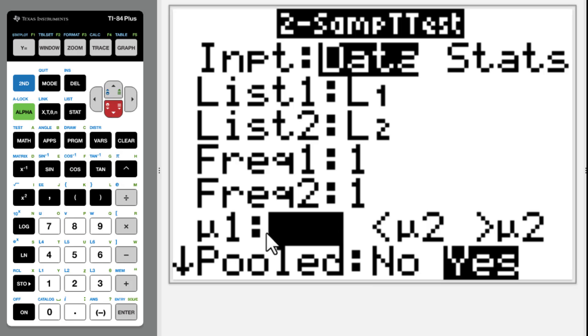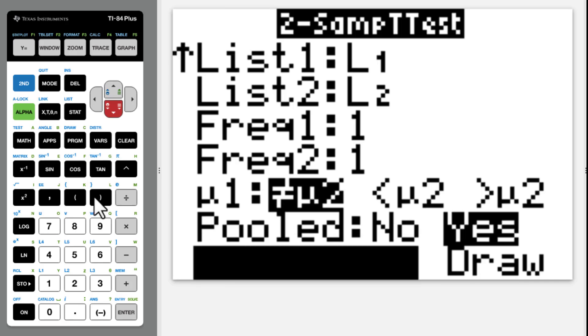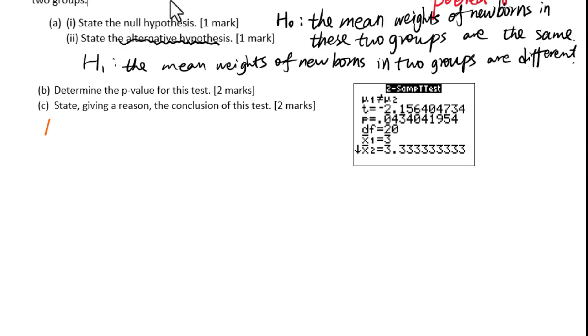We check whether the means for two groups are the same or not. Pooled, because we assume standard deviations are the same. Then calculate. P-value equals 0.0434. For B, p-value equals 0.0434.